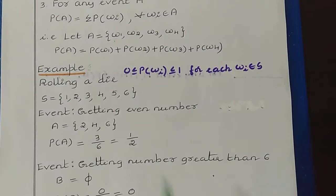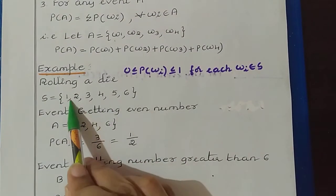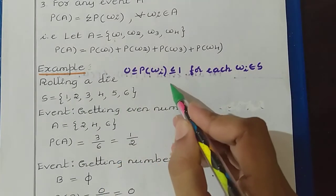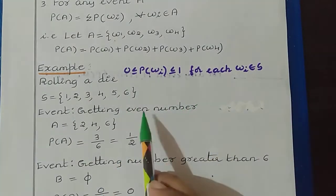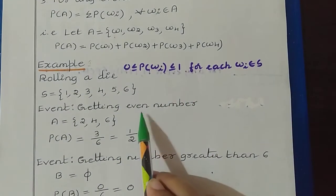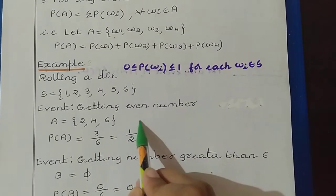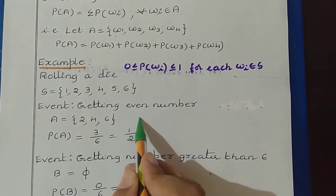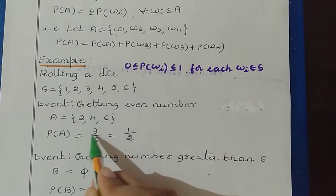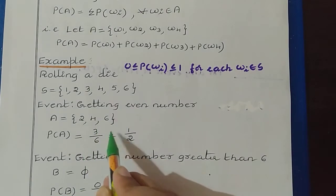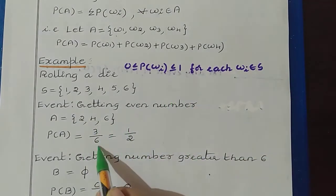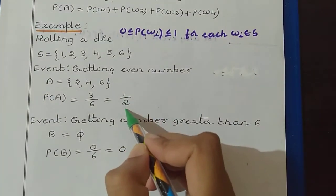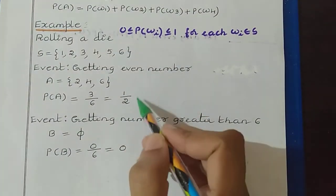In this experiment, we have outcomes 1, 2, 3, 4, 5, 6, so total outcomes are 6. For this event we have 3 favorable outcomes. So number of favorable outcomes, that is 3, divided by total number of outcomes, that is 6. So here we get 1/2 for this event.